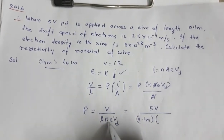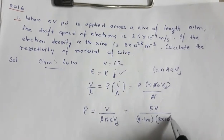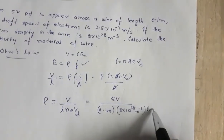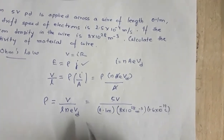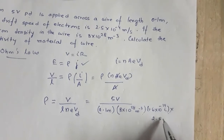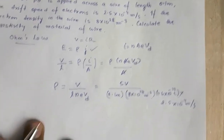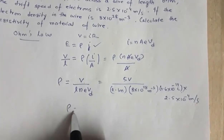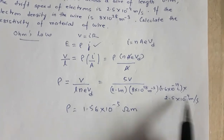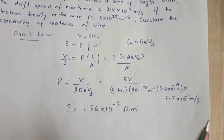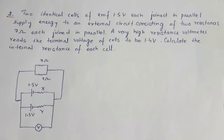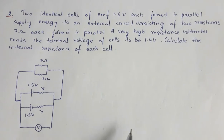Substituting: n = 8 × 10²⁸ per m³, e = 1.6 × 10⁻¹⁹ coulomb, Vd = 2.5 × 10⁻⁴ m/s. Calculating gives ρ = 1.56 × 10⁻⁵ ohm·meter. The essence of this question is Ohm's law in vector form: E = ρj.